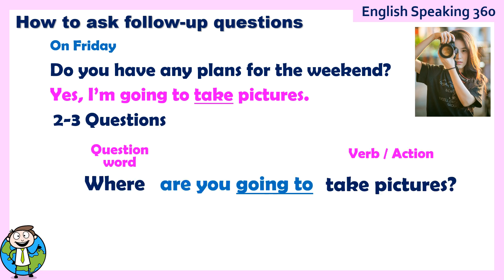Now, something very important. Where are you going to take pictures? So, are you going to is actually the verb to be — are — plus going to. Going to is a future plan; it shows that there is a plan. Here we are talking about weekend plans, so that's why you must use be going to. You shouldn't use will. Where will you take pictures? It's not so good because it's a plan. So, where are you going to take pictures?